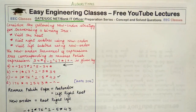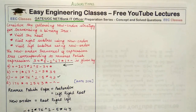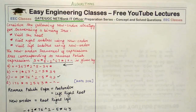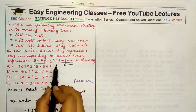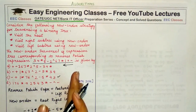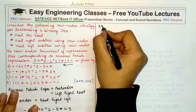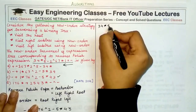That was the shortcut method. In case this trick does not strike you during the exam and you decide to solve it using a proper long method, what you would do is first convert the given post order traversal into an infix expression. The given expression is a postfix expression, so you have to convert it to infix.